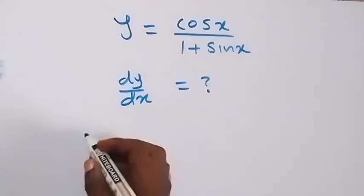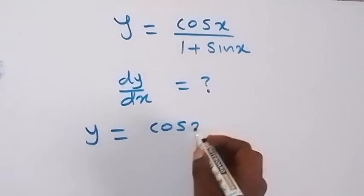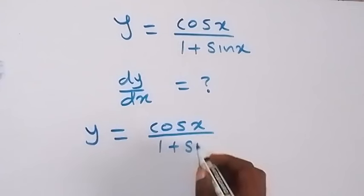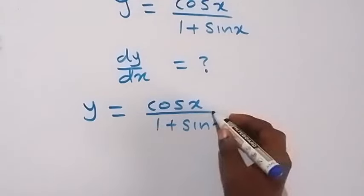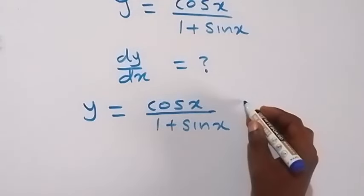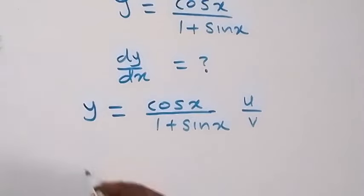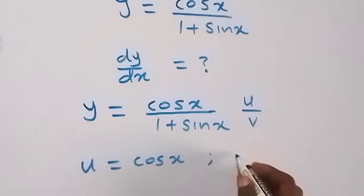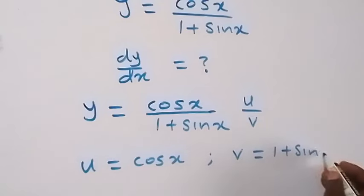From what is given, which is y equals cos x over 1 plus sin x, this follows from when we have y equals u over v. So here, we let u be equal to cos x, and v equals 1 plus sin x.